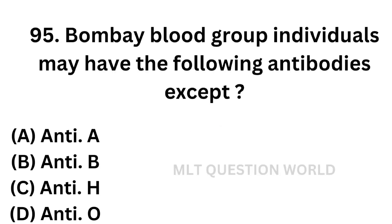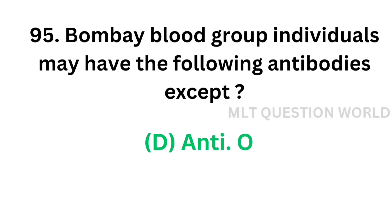Question number 95: Bombay blood group individuals may have the following antibodies except. Option A: anti-A. Option B: anti-B. Option C: anti-H. Option D: anti-O. Bombay blood group individuals may have anti-A, anti-B, and anti-H antibodies in their serum, but there will be no anti-O antibody. So the correct answer is Option D, anti-O antibody.